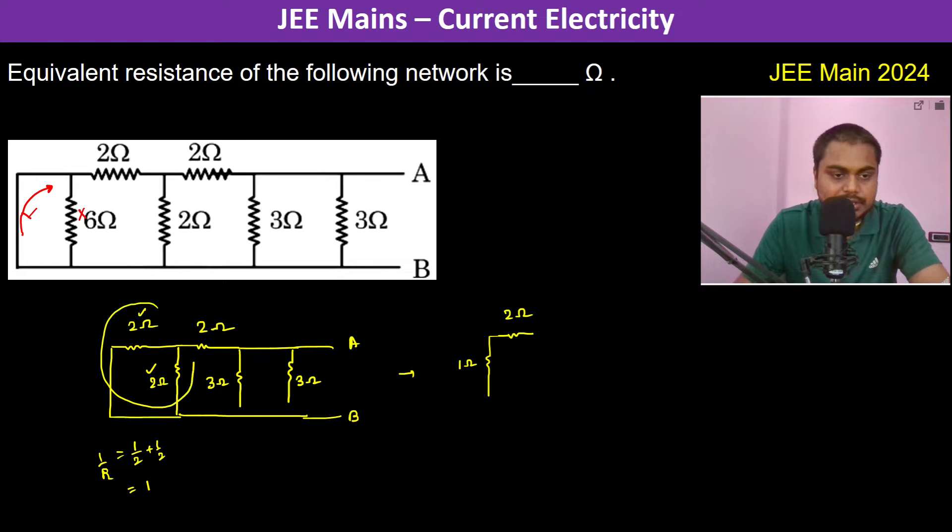In dono ko hum log ne replace kar diya A kiss se 1 ohm, okay, that's what we have done. So 2 ohm, and then it's 3 ohm, and then again it's 3 ohm.